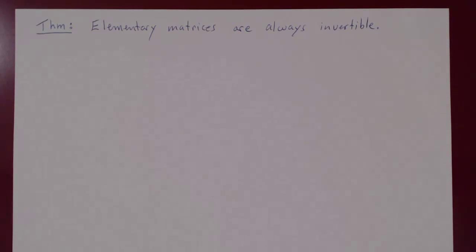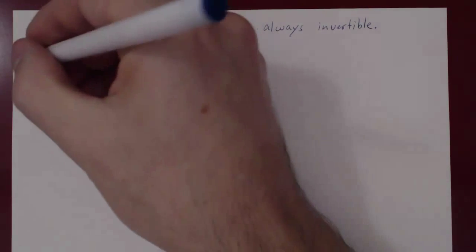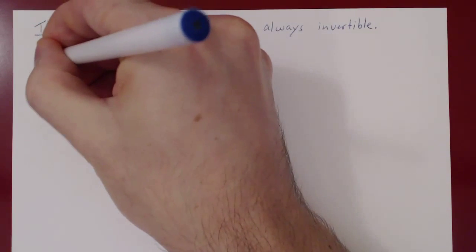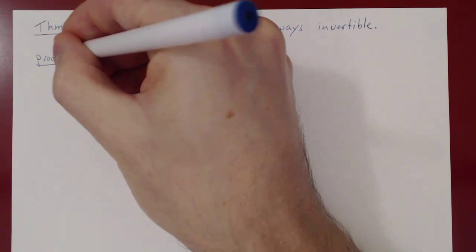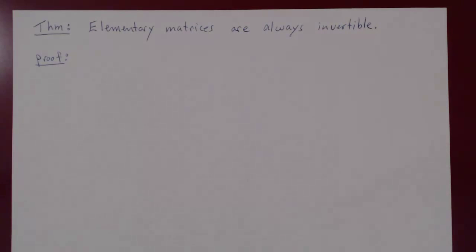Let's prove this, and the proof is surprisingly easy. If you remember, there are only three types of elementary matrices, each one corresponding to the given row operation.